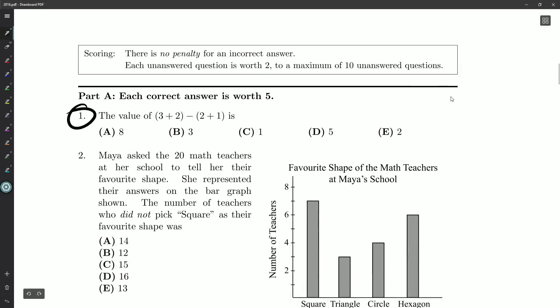So the value of (3 + 2) minus (2 + 1) is. Some of you will be able to do that in your head, no problem. Others might have to grab a calculator or write it down, and that's fine too.